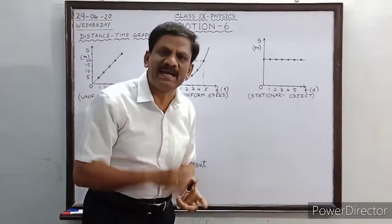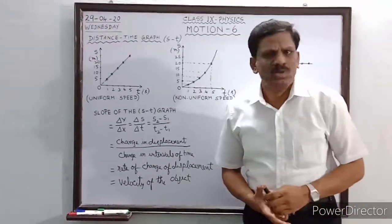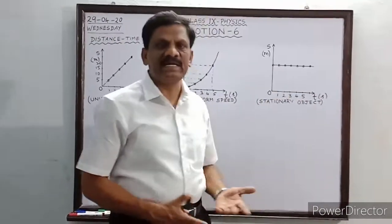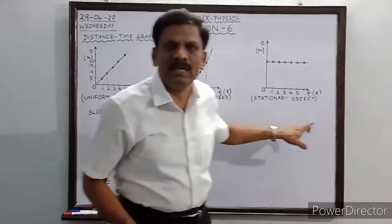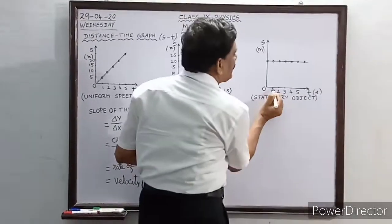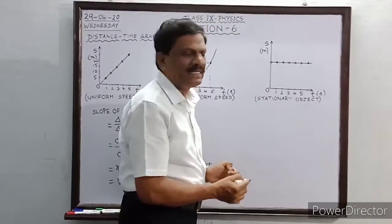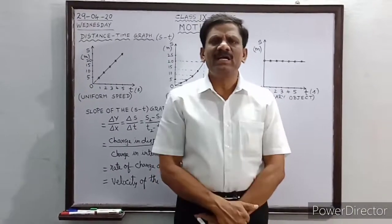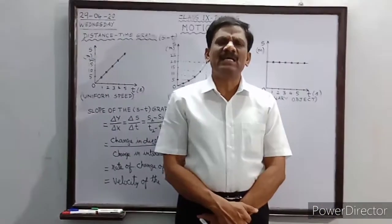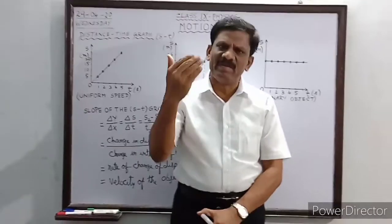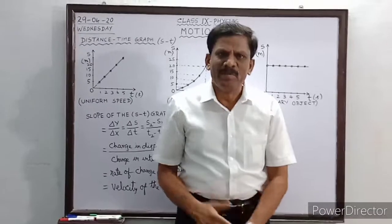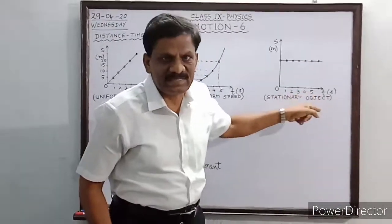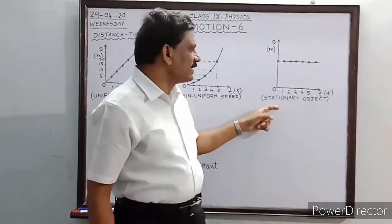In the third case, the graph is a straight line but not passing through the origin — it is parallel to the x-axis, which is the time axis. After 1 second, 2 seconds, or 5 seconds, the body remains at the same distance. For example, if I stand near the board and neither of us moves, the distance between us stays the same throughout. This means the body is at rest — it is a stationary object.